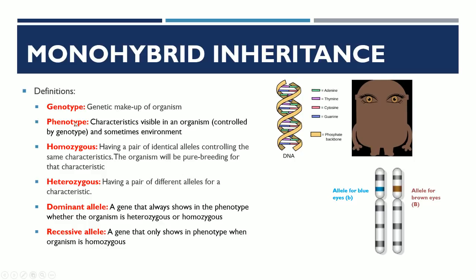Let's take a look at some definitions. The genotype is basically the genetic makeup of an organism — so that's like DNA, chromosomes, and things like that. The phenotype is the characteristics that are visible in an organism, and this is controlled by both genotype and the environment. Homozygous means having a pair of identical alleles controlling for the same characteristics. It's not homozygous here, because you've got one controlling for brown eyes and the other controlling for blue eyes. Heterozygous is having a pair of different alleles for a characteristic — so this individual is heterozygous, specifically for eye colour.